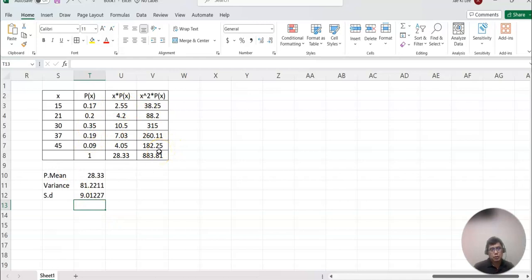So this time, we talked about finding population mean, variance, and standard deviation using probability distribution tables. I hope this video helps you understand how to do it. I will see you again with a different video. Thank you.